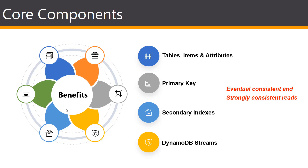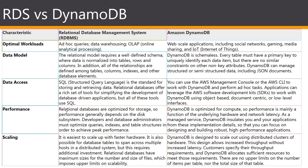DynamoDB supports eventually consistent or strongly consistent reads. Eventually consistent means there will be a little bit of lag in consistency, whereas strongly consistent means the data is replicated in a matter of mere milliseconds. This table gives you a good comparison between a relational database management system — also known as RDS — that AWS supports, and Amazon DynamoDB.